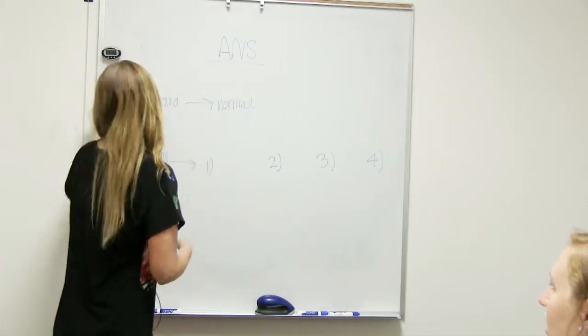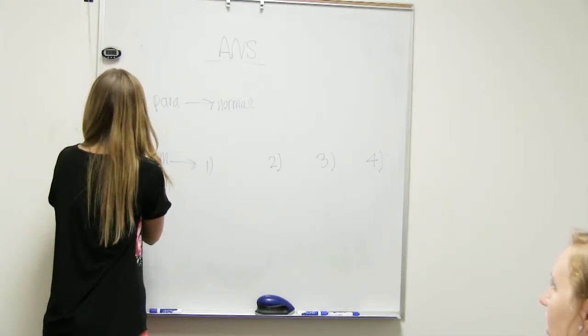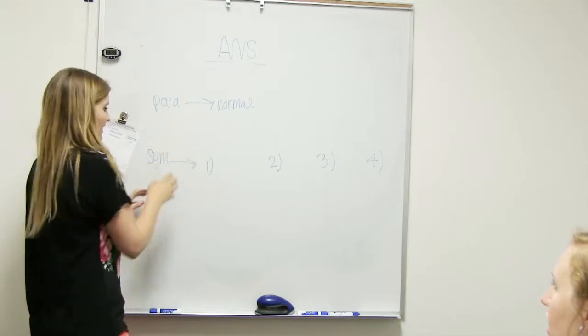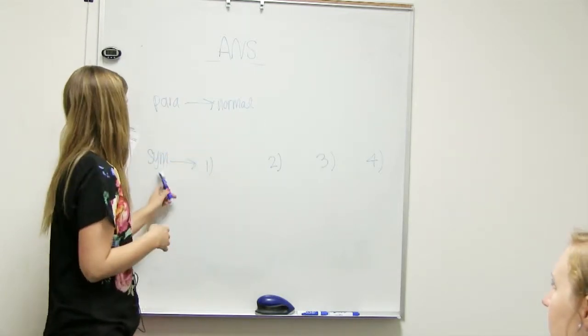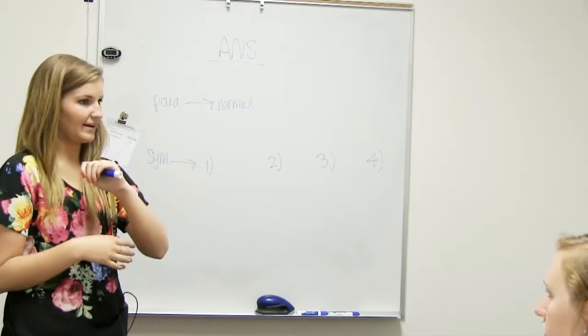Okay, so for your autonomic nervous system, you have the parasympathetic and the sympathetic. Parasympathetic, like we said, is a normal pathway, whereas the sympathetic is going to have four different axon pathways.